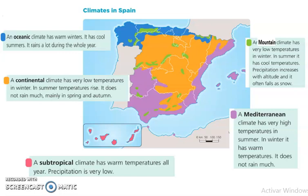A mountain climate. It has very low temperatures in winter. In summer, it has cool temperatures. Precipitation increases with altitude and it often falls as snow.